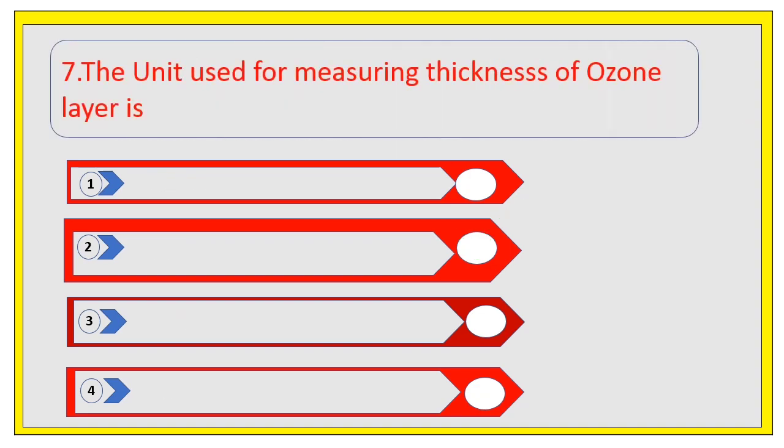The unit used for measuring thickness of ozone layer is called. Options are meter, Dobson unit, fit, and radium measure. The right answer is Dobson unit.